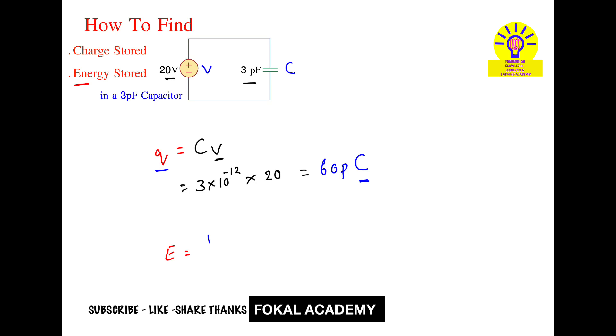That is half of CV square. This is the direct formula for finding energy stored in a capacitor. So that is equal to half of C, means capacitance, that is 3pF. So that is 3 into 10 power minus 12 into V means voltage, that is 20. A square is there, 20 square.